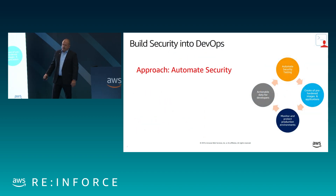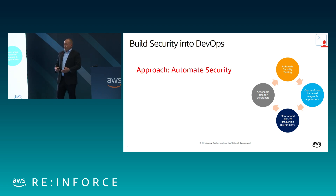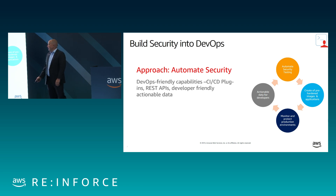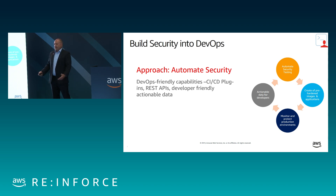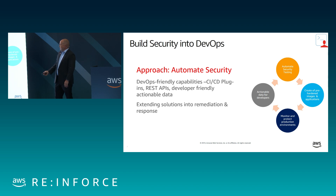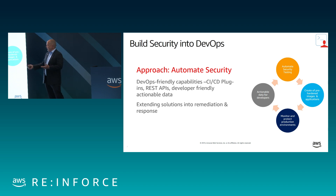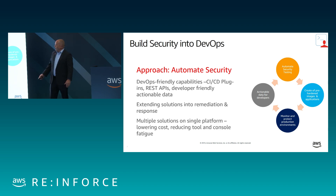We need to look at automating this approach — the whole DevOps agile implementation of: you build it, you run it, you monitor, you iterate, and you repeat the cycle. We insert security into that using CI/CD plugins, RESTful APIs, and other developer-friendly tools. Extending these solutions allows teams to remediate findings in these pipelines to help prevent issues from getting into production, and overall ensures you have a secure environment.